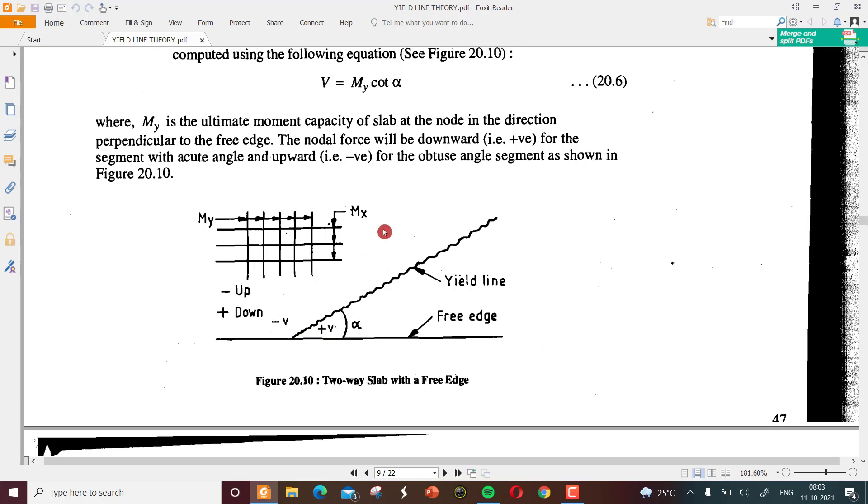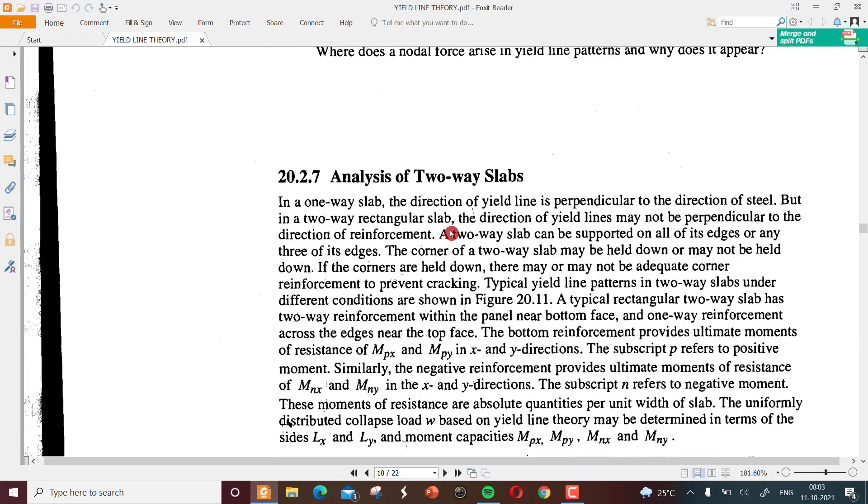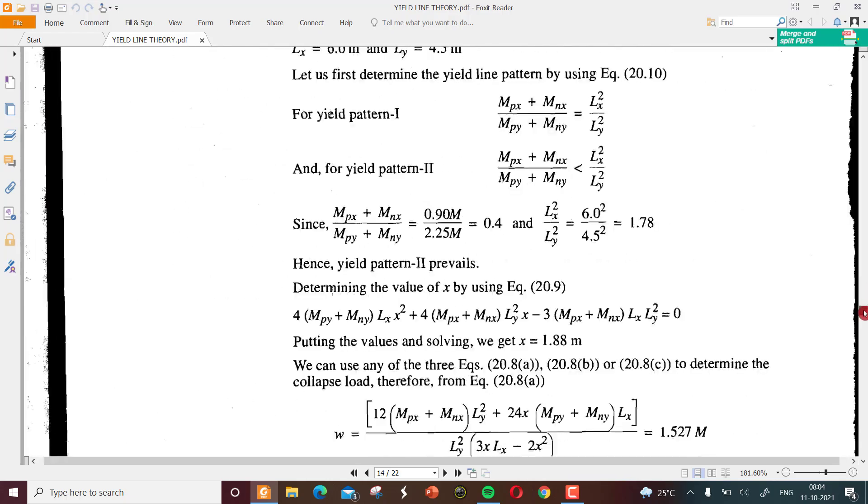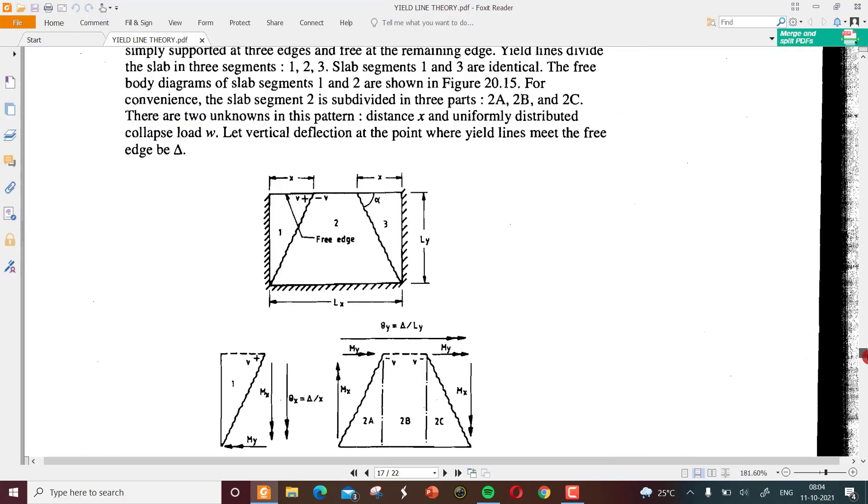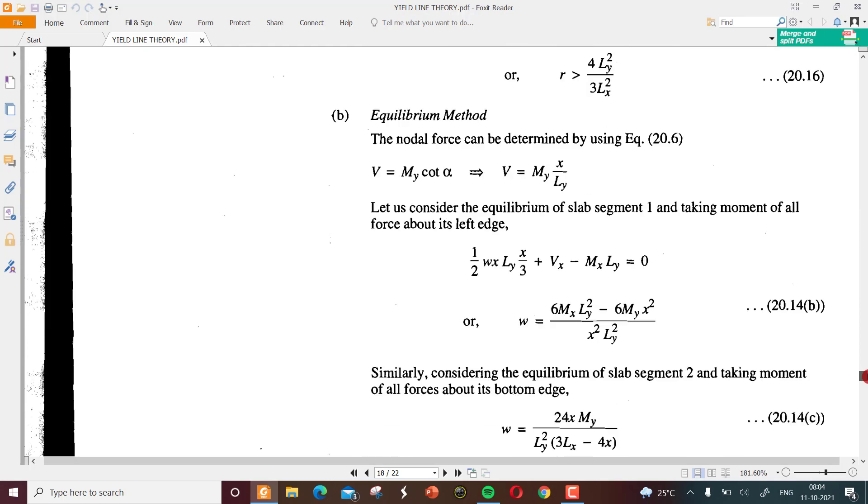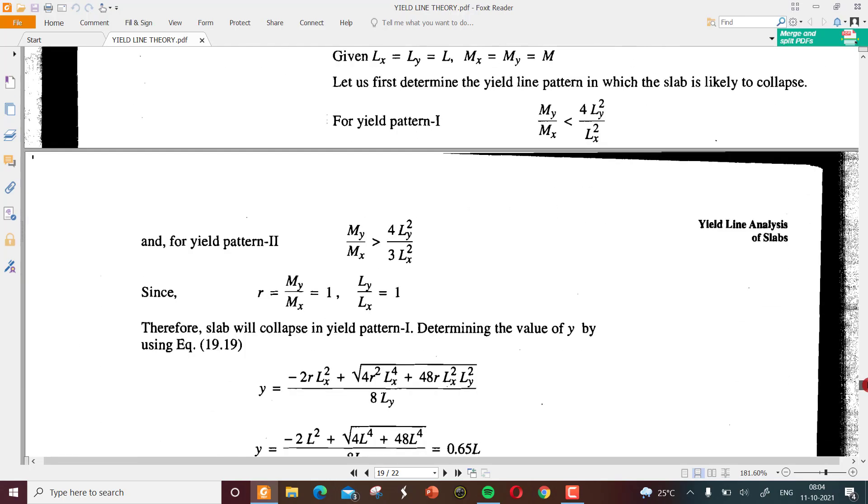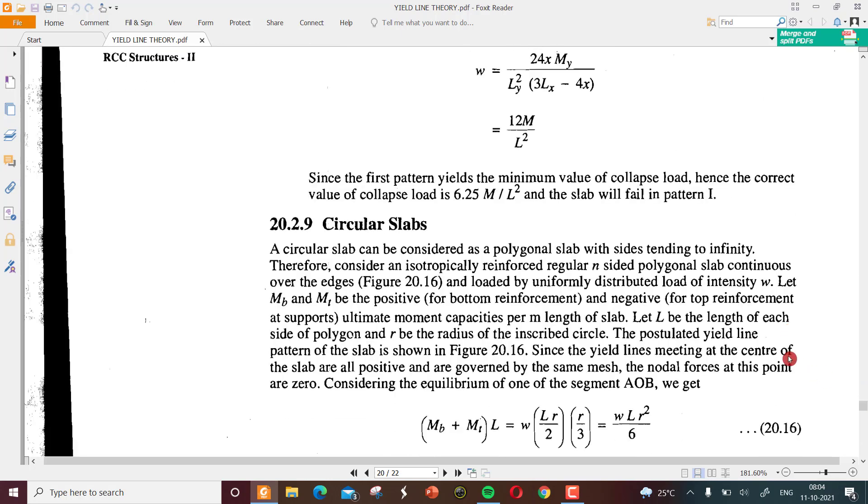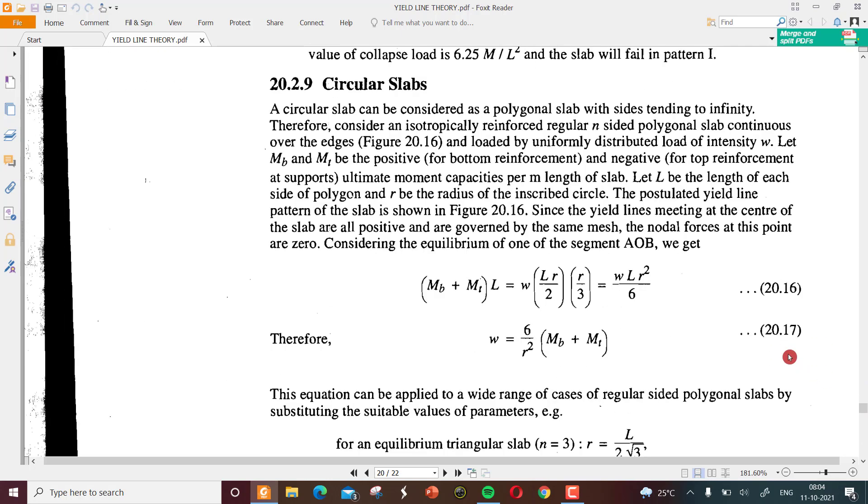The yield line is at an angle alpha from the free edge. If the angle is acute, the nodal force is taken downward because it's having more component downwards and it will be positive. With an acute angle which is having more horizontal component, it is taken upward. That's the basic theory or guidelines for solving the problems with the intersection of yield lines. This will be very useful for analyzing the circular slabs also.